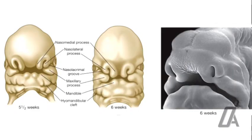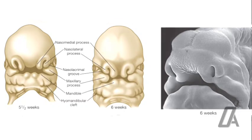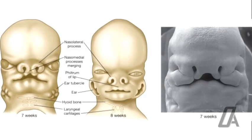By about the sixth week, the processes of the face are easily discernible. The stomodeum is bound by the frontonasal process above, the mandibular process below, and the sides being occupied by the maxillary processes. As development of the various processes proceeds, the stomodeum narrows and forms the mouth. The maxillary process grows ventromedially towards the nasal processes and fuses with the lateral nasal process, then migrates medially to contact the inferolateral side of the medial nasal process. The maxillary and medial nasal processes are initially separated by the epithelial nasal fin, which soon degenerates so that the mesenchyme of the two processes can fuse. The maxillary and mandibular processes fuse at the sides to form the cheek tissue.